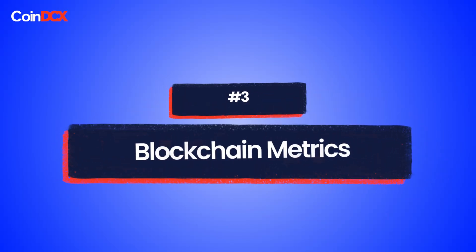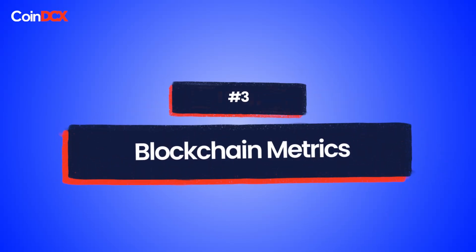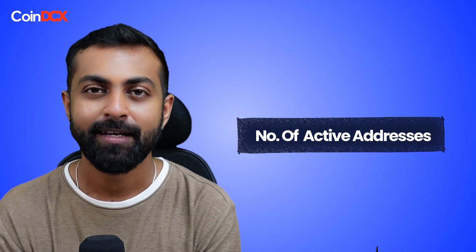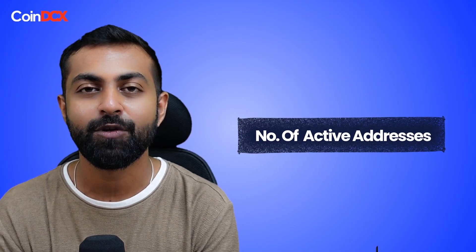Let's now understand blockchain metrics. Number of token holders means how many people are owners of these tokens — in equity markets, we call this the number of shareholders. Number of active addresses stands for the number of users that are actively transacting in the network. The higher, the better.